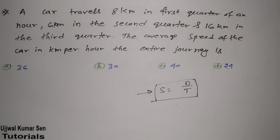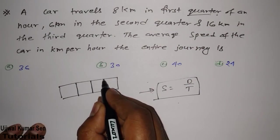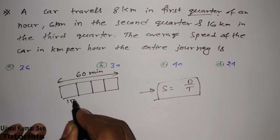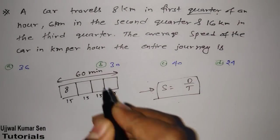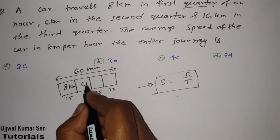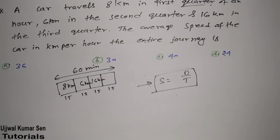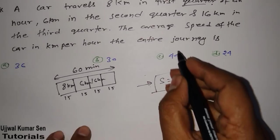In this question we are given that a car travels 8 kilometers in the first quarter of an hour. One hour is divided into four quarters of 15 minutes each. In the first quarter it travels 8 kilometers, in the second quarter 6 kilometers, and in the third quarter 16 kilometers. We have to find the average speed of the car in kilometers per hour for the entire journey.